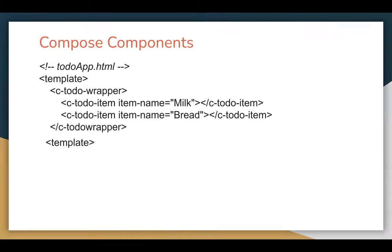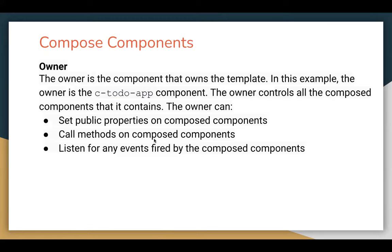Composing means if you have more than one component, you can call one component into another. In this example, you can see the topmost component will be todo-app, and in that component's HTML file, we are calling c-todo-wrapper. So basically the component name is todo-wrapper, and this will be known as a container component. Inside this container component, I am calling a component twice, which is named as todo-item.